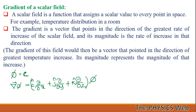Before we solve the problems, let's quickly recap what the gradient of a scalar field is. A scalar field is a function that assigns a scalar value to every point in space. For example, temperature distribution in a room — the temperature at all points in a room at a particular time is an example of a scalar field. Another example is an equipotential surface in electrostatics.